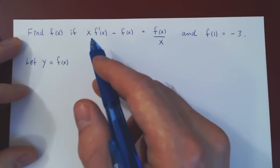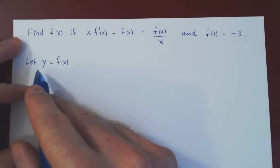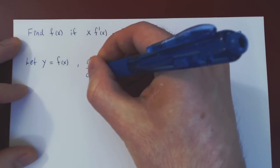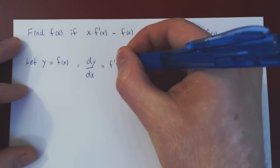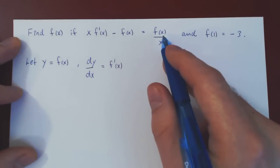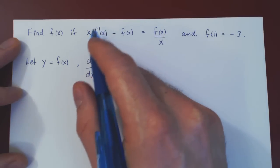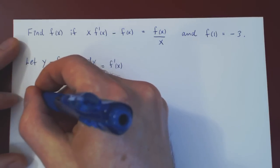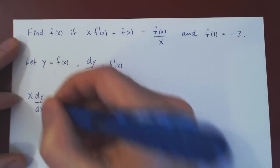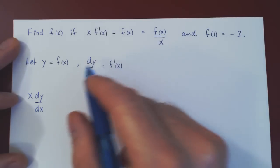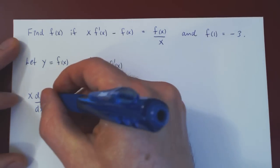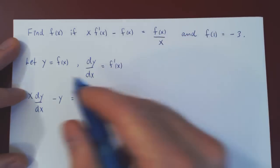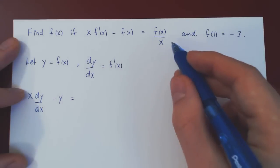We need the derivative: if y equals f of x, we can differentiate y with respect to x, which gives f prime of x. Now let's replace: x times f prime becomes x times dy/dx, minus f of x, which is minus y. This equals f of x over x, which is y over x.